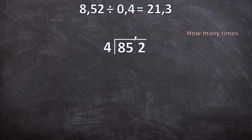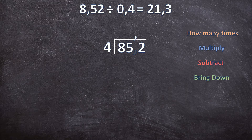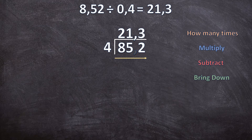Now continue like normal long division. A quick recap of the four steps: step one — ask yourself how many times; step two — multiply; step three — subtract; step four — bring down. Remember, we work from left to right and the answer, or quotient, goes on top of the long division bracket.